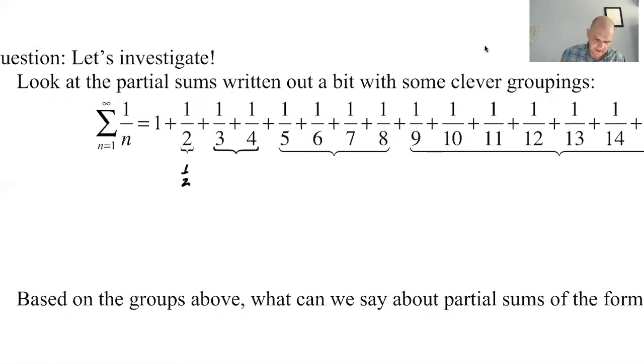The next grouping, though, 1 third is bigger than 1 fourth, which means that 1 third plus 1 fourth is bigger than 1 fourth plus 1 fourth, which means that this is also greater than 1 half. Let's look at the next grouping. So here, 1 fifth is bigger than 1 eighth, 1 sixth is bigger than 1 eighth, 1 seventh is bigger than 1 eighth, then 1 eighth is 1 eighth. So this sum here is bigger than 4 times 1 eighth. This is bigger than 1 half.